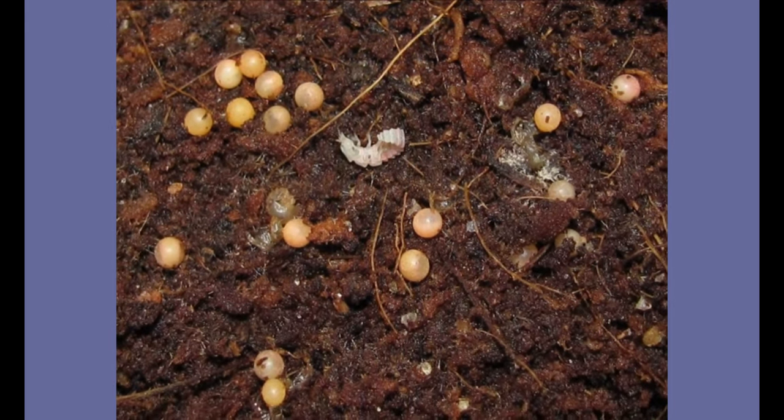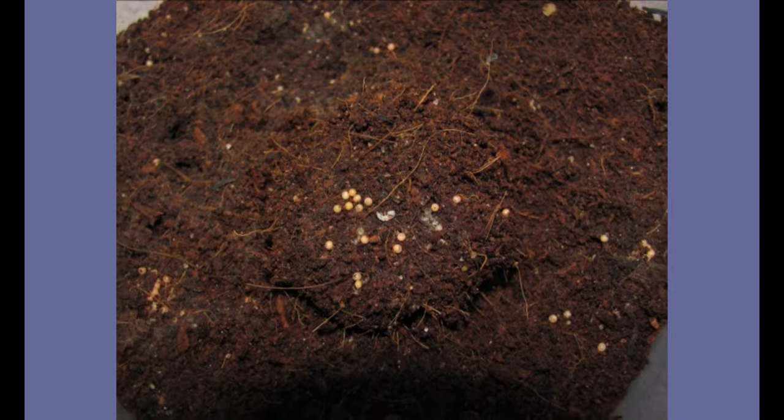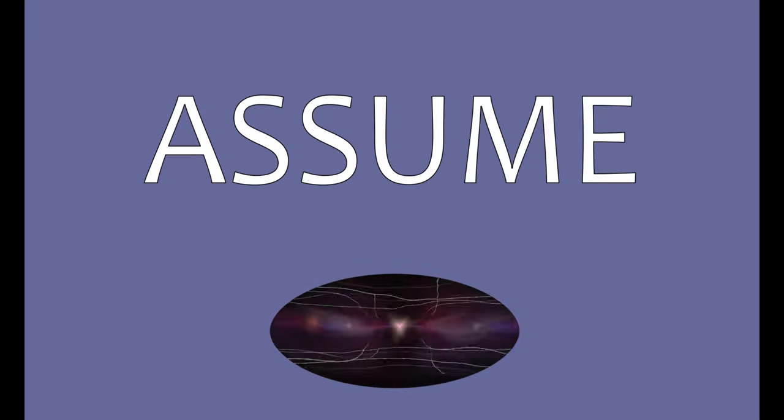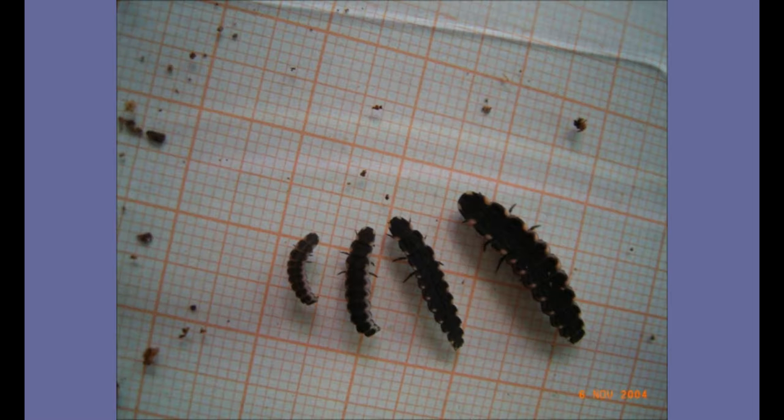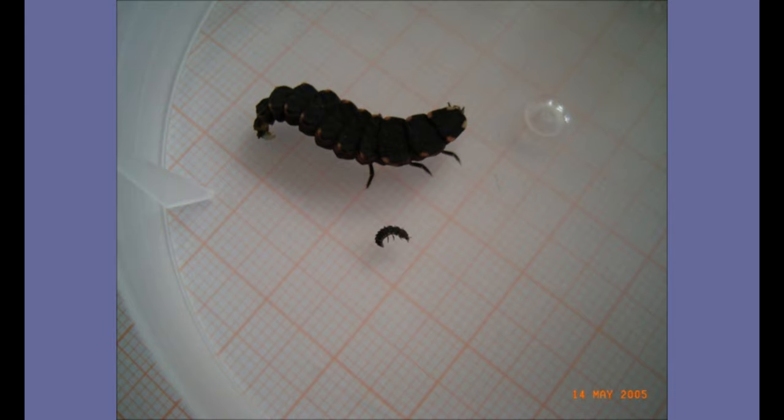After about a month the larvae will hatch. But some eggs may take longer to develop, like way longer. Some of them might even hatch not before the next generation is hatching. So be careful not to throw away any eggs that you assume won't hatch anymore. Remember if you assume you're making an ass out of you and me. The growth of the larvae is quite pronounced. These are the first four stages in comparison. And this is the first stage next to a mature larva shortly before pupation.